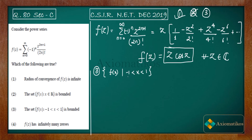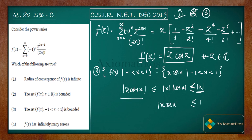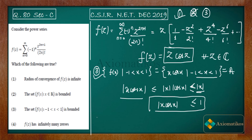Option 3 says: if x ∈ (−1, 1), then the set {f(x) : x ∈ (−1,1)} is bounded. We have f(x) = x·cos(x) for x ∈ (−1, 1). We know |x·cos(x)| ≤ |x|, because the maximum value of |cos(x)| is 1. Since x ∈ (−1, 1), we have |x| < 1, so x·cos(x) is bounded by 1. Therefore this set is bounded and Option 3 is correct.